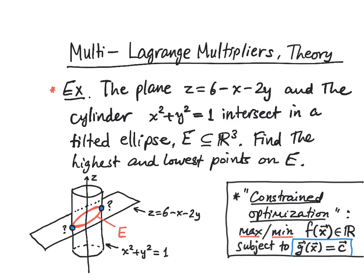The function g is given and known, and the constant c is also known. Notice that g can be vector-valued, which means you really might have several constraints, put together in the form of a vector equation. For example, if you have three constraints, you can write them all together as one equation between three-dimensional vectors. The function f is called the objective function — that's the basic problem to be solved.